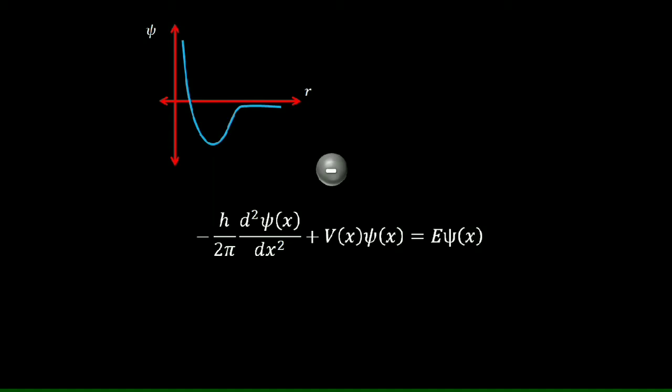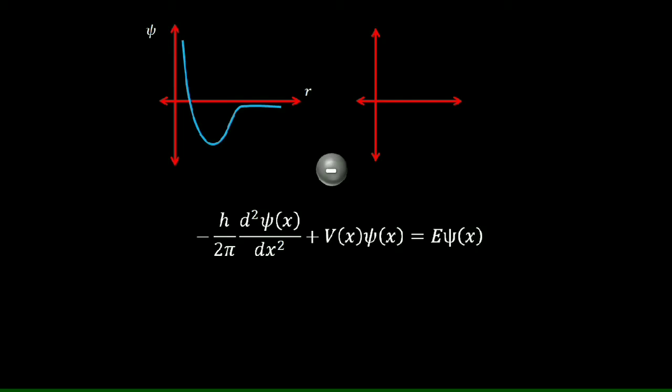For example, suppose we are dealing with electrons present in an atom. If we plot the square of the wave function against position on the atom, we get the probability function regarding the presence of electrons in that position.